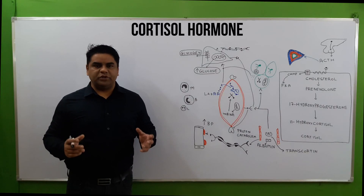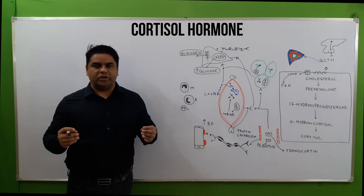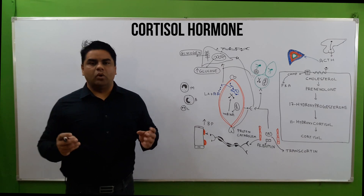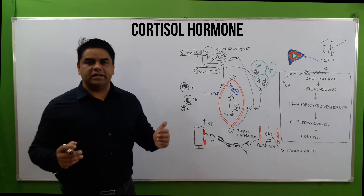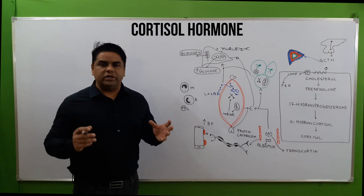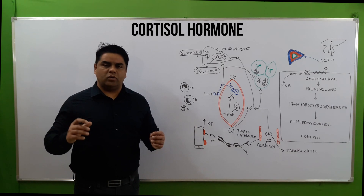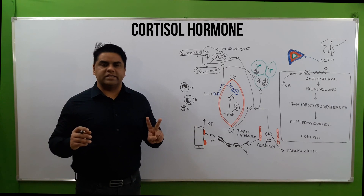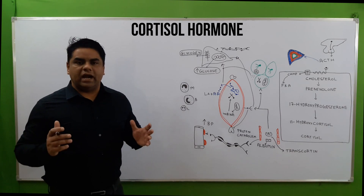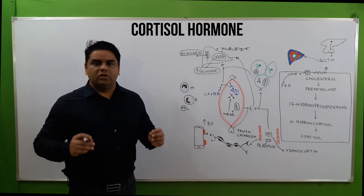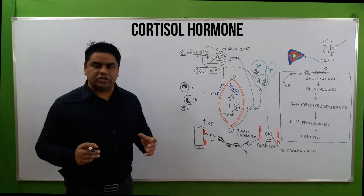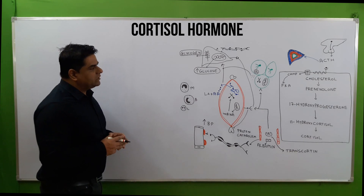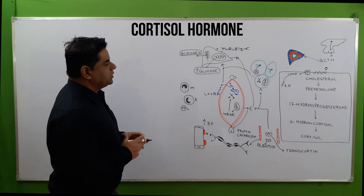Hello everyone, I hope you are doing well. Today we are going to discuss one of the most important hormones of the endocrine system, that is cortisol. We will also discuss cortisol in relation to two disease conditions: Addison disease and Cushing syndrome, which we will cover at the end of this lecture. Let's begin our journey with the hypothalamus.